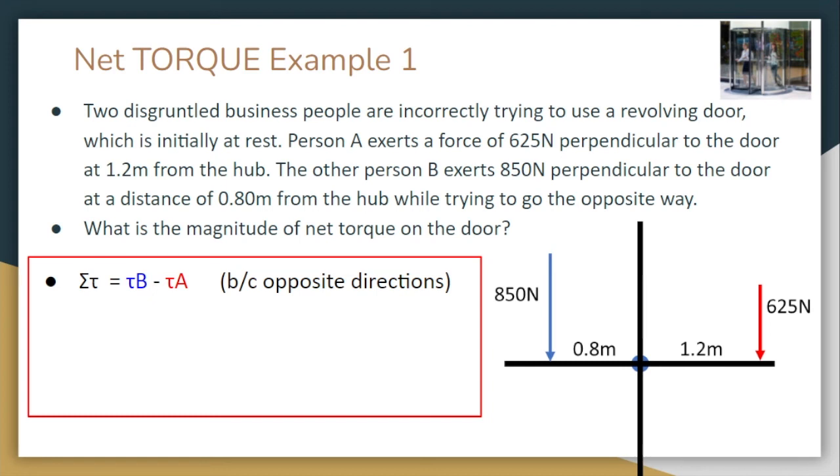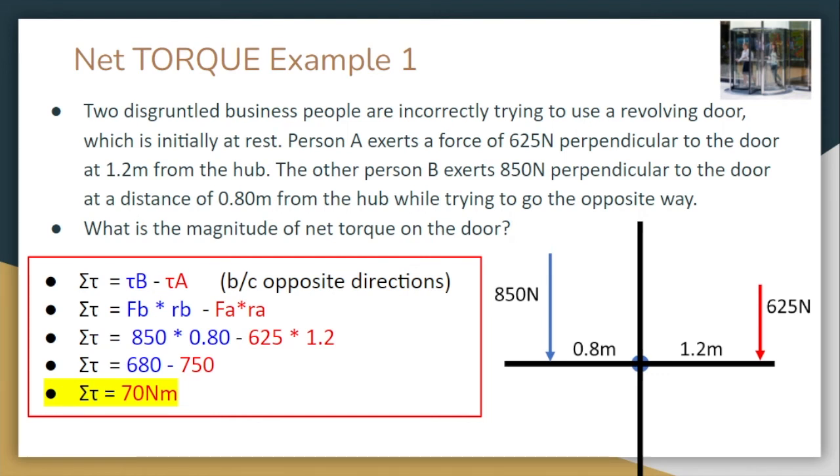So we know that net torque is equal to the positive minus the negative or the counterclockwise minus the clockwise. Because they're in opposite directions, we know that one's positive and the other is negative. Person B is moving counterclockwise, so they're going to be positive. We know that torque is equal to force times radius when the force is perpendicular to the rotating axes. Now we're going to take our numbers and plug them in. Then we're going to simplify, and then it's just some simple algebra. And we find out that the net torque is equal to 70 newton meters. Again, it's positive because I asked for the magnitude of the net torque on the door.